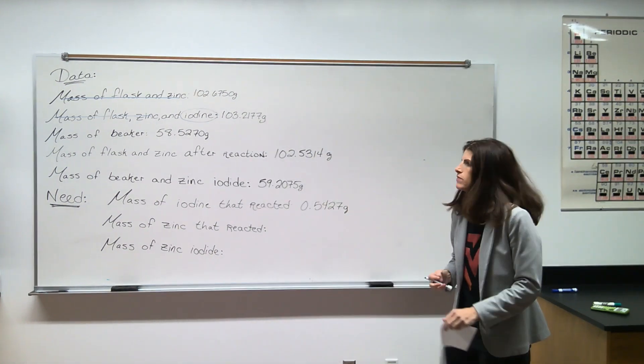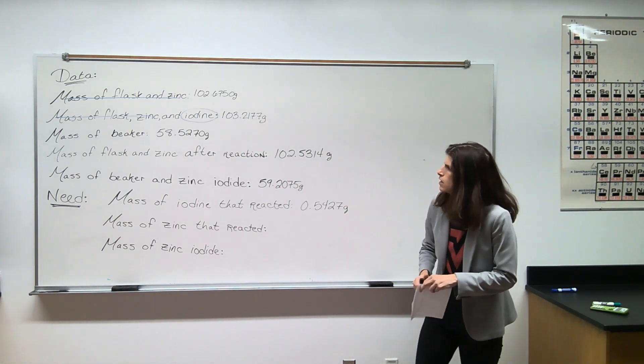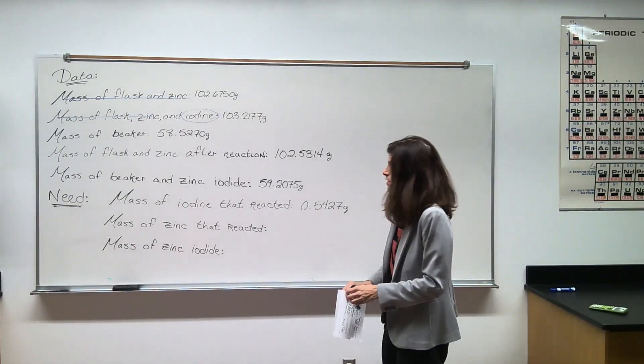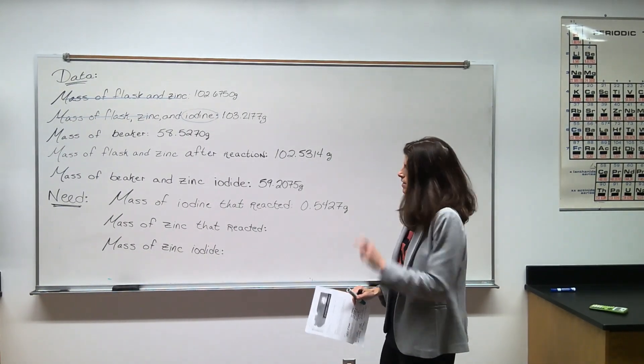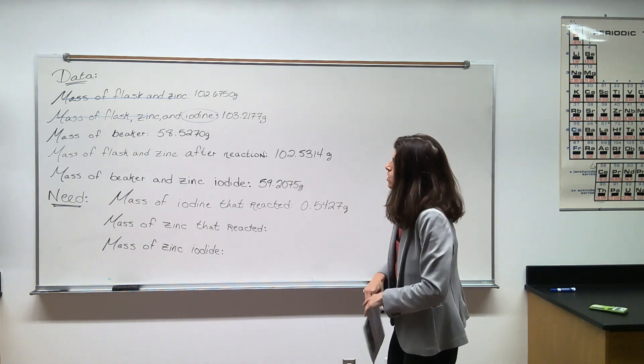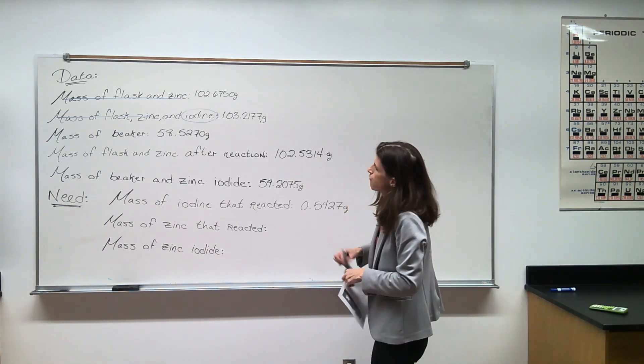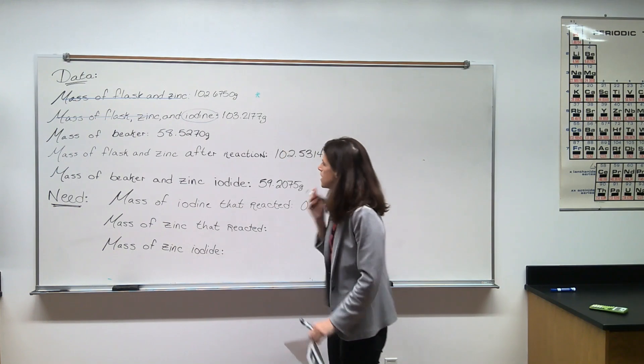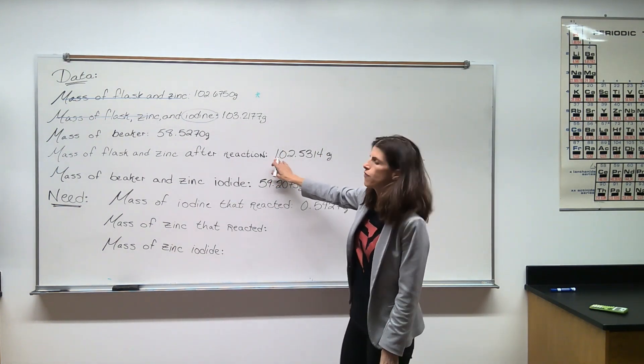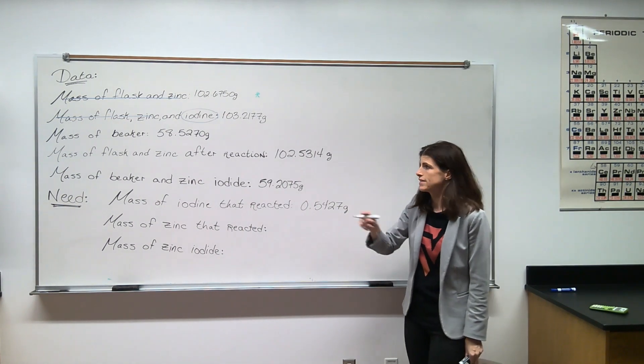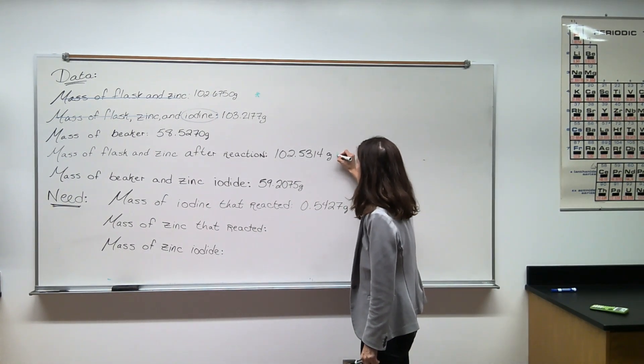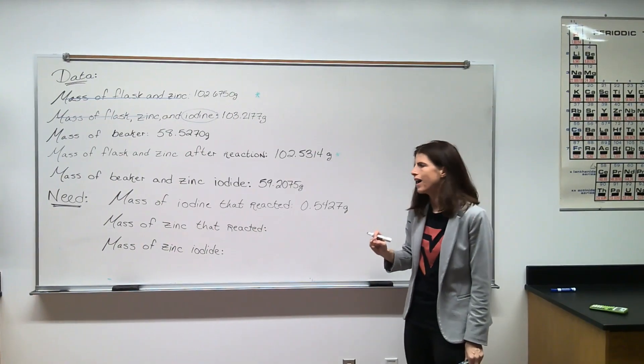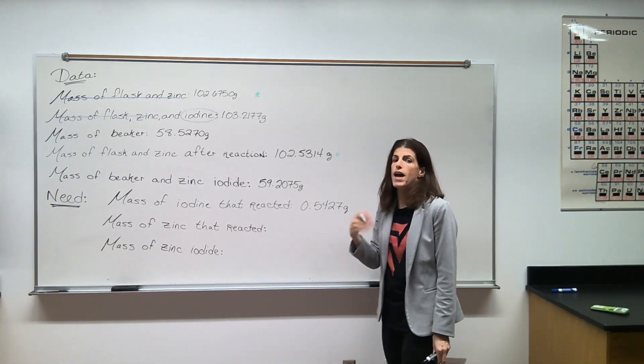Next, we're going to figure out the mass of the zinc that reacted. I'm going to use a similar technique, just scanning through my lines here and looking for lines that contain zinc and lines that don't contain zinc. I need everything to cancel out except for the word zinc. So I'm looking at this first line here because it says mass of flask and zinc, and then I noticed that this fourth data value says mass of flask and zinc after the reaction.